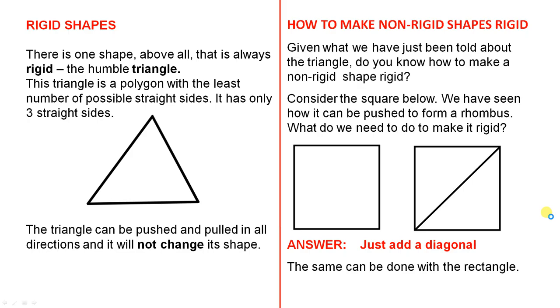Rigid shapes. There is one shape above all that is always rigid. The humble triangle. This triangle is a polygon with the least number of possible straight sides. It has only 3 straight sides.